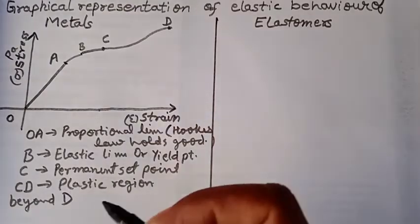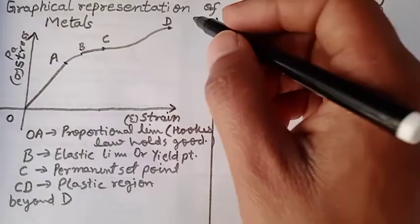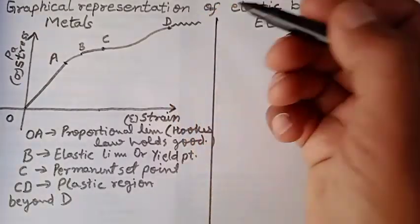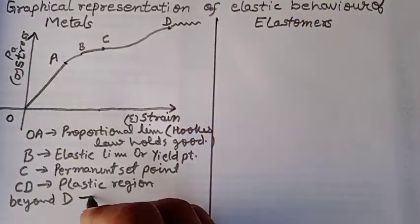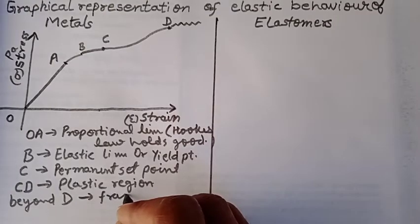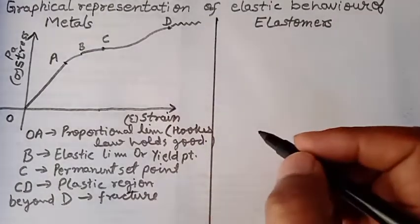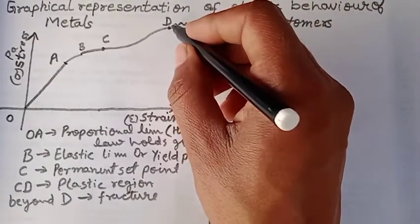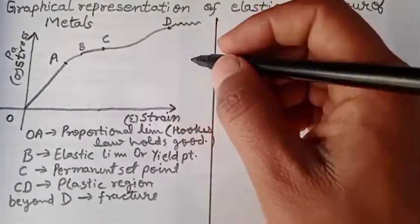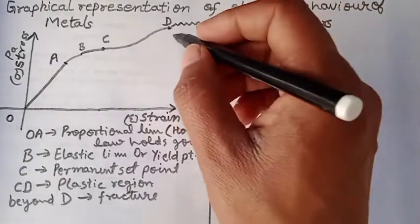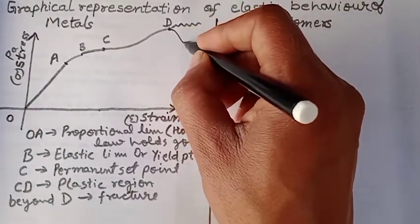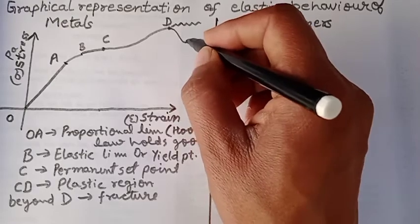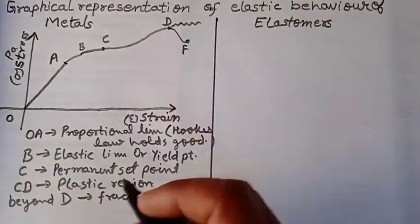We have two options. Further, if we increase stress, it will deform and break. Beyond D is the fracture point. It will get fractured. In fact, if beyond D, even if we decrease stress—that is, if we decrease deforming force—still strain increases to fracture point.